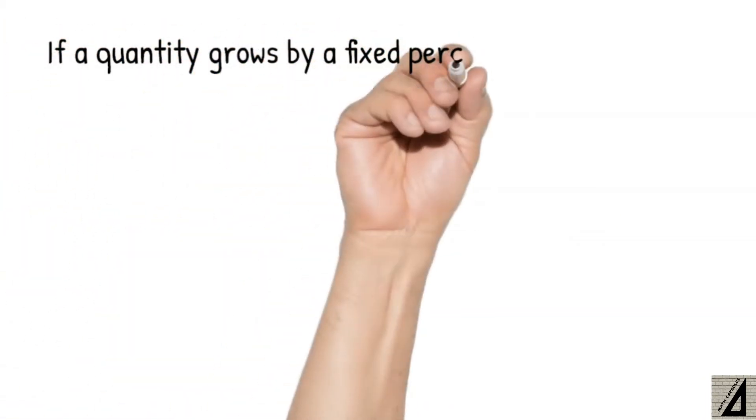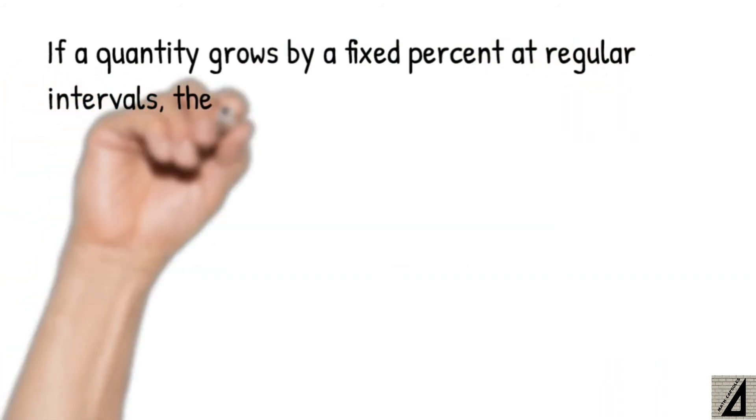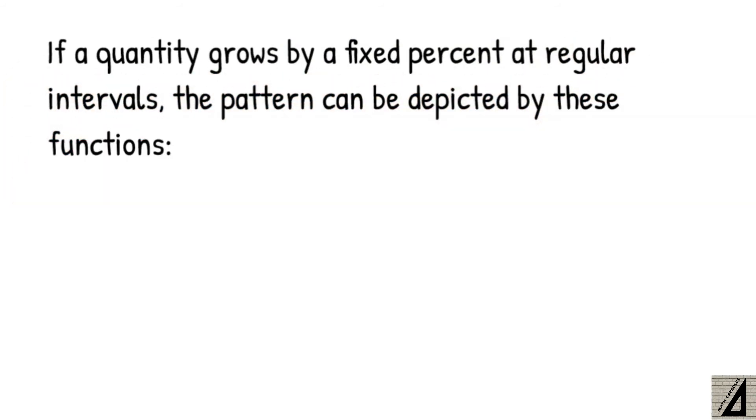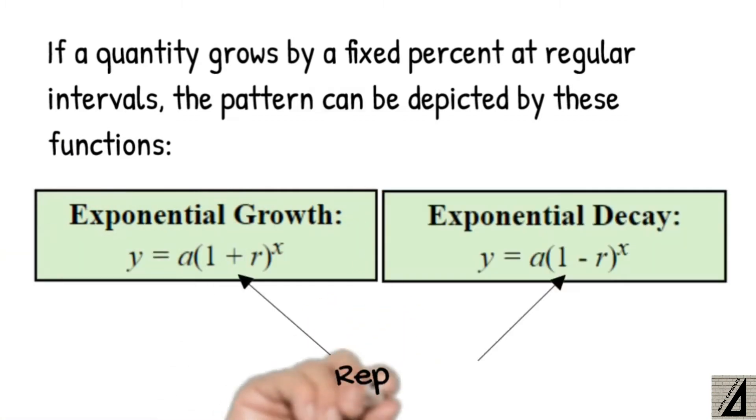If a quantity grows by a fixed percent at regular intervals, the pattern can be depicted by these functions: exponential growth and exponential decay, where the exponential growth is y equals a times 1 plus r to the power x, and the exponential decay is y equals a times 1 minus r to the power x. In the growth and decay functions, the 1 plus r and 1 minus r replace the b in the general form of the exponential function.